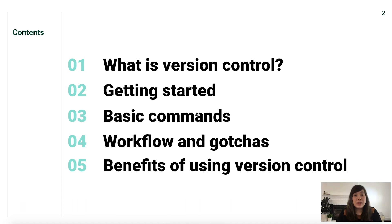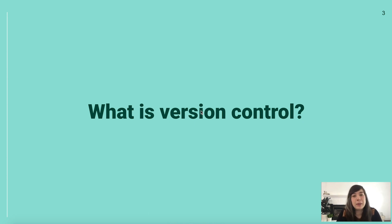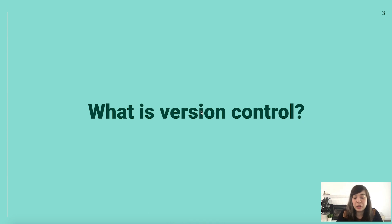Then we'll jump into the benefits of using version control as a wrap-up as well as any other resources that I think would be really useful for you. So what is version control and why is it even useful? The first thing you need to understand is Git itself is a distributed version control system. Git is actually different from GitHub. GitHub is a website that allows you to upload your code to it, but Git itself is free and open source and is the version control system.